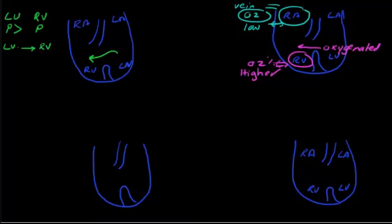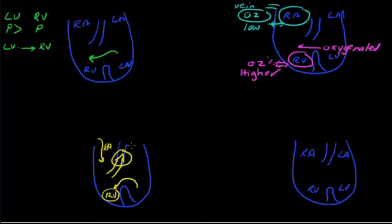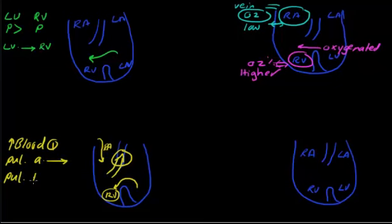The third issue: when you have more blood coming from the right atrium to the right ventricle, and more blood from the left ventricle to the right ventricle, you now have more blood flowing through the pulmonary artery. When you have an increased amount of blood flow through the pulmonary artery, there will be arteriolar thickening, and after that you will have pulmonary hypertension.